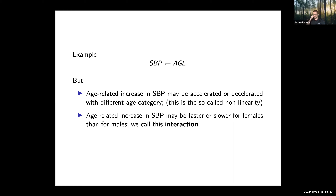This means we may be looking at non-linearity — and that was part of the last lab where we plotted SBP as the outcome on the Y-axis versus age on the X-axis. If this change is somewhat linear you can assume linearity; if it is not linear — accelerated or decelerated with different age categories — we're looking at non-linearity. And if changes in SBP as a function of age differ between females and males, this would be a case for interaction.